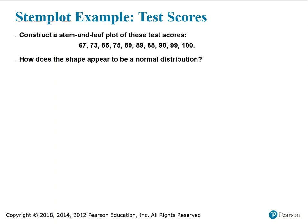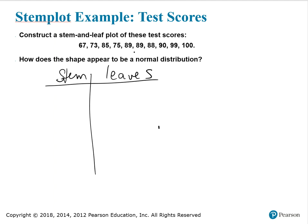Let's construct a stem plot for these test scores and determine if the shape appears to be normal. In a stem plot, we need the stems and the leaves. The leaves are the ones digits, and the stem would be the tens, or tens and hundreds as the case may be. These data happen to already be in order, which is great — stem plots are good for putting data values in order.